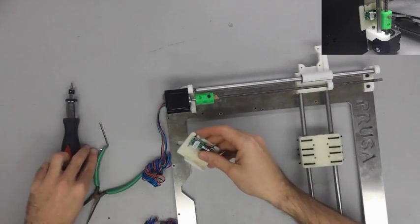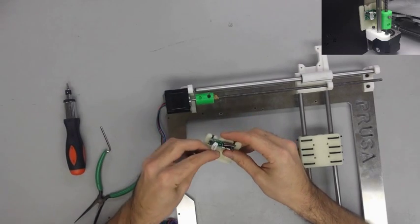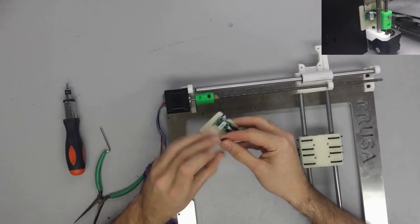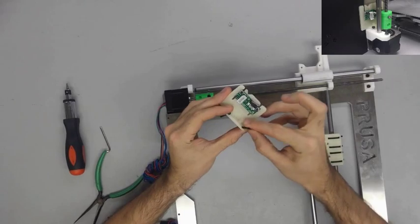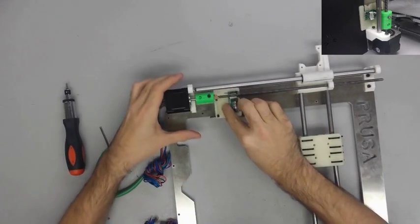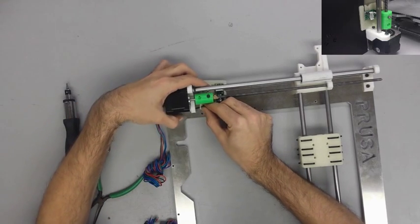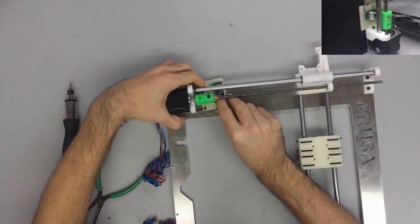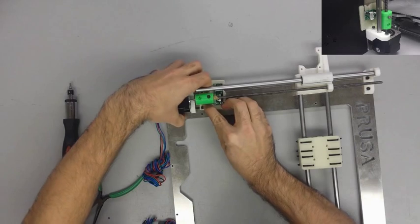Once your end stop is in place, go ahead and fit in the two screws through the holes on the end stop holder. Then you can fit it into the back two holes on the left bottom Z corner. And that's why we left those two holes open in the previous step.